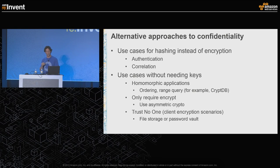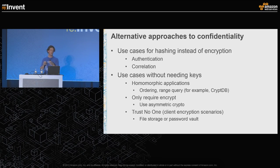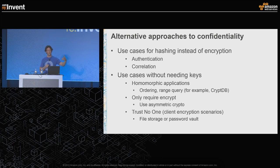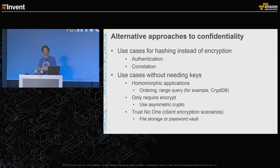The last option is the trust-no-one model — another way of saying client-side crypto. Your service doesn't have to deal with cryptographic keys if you don't ever work on the plain text data. Allow the client to do the encryption and then they send you the cipher text and you never decrypt it. In a lot of trust-no-one models you can do a key derivation based on something the person knows rather than something stored on disk — for example, a password vault where you take your password and use it to derive a key that then encrypts your data.